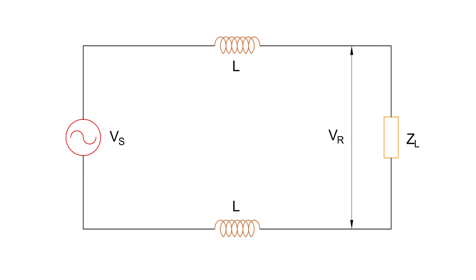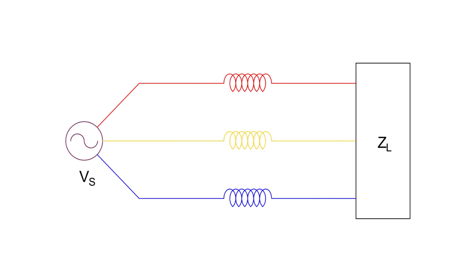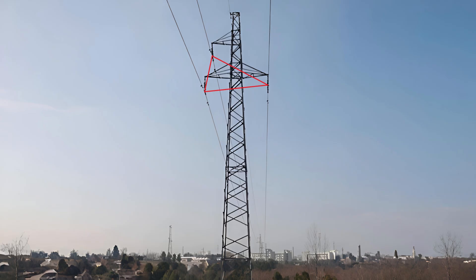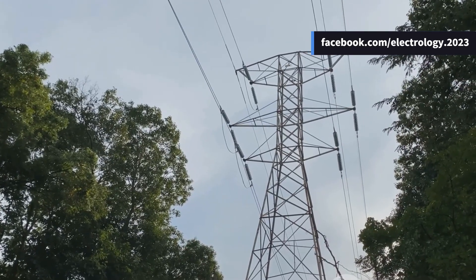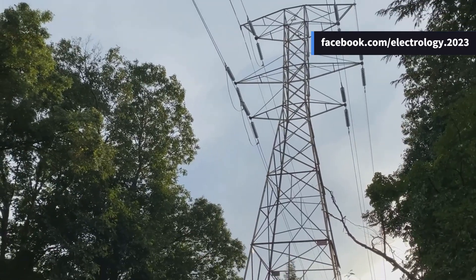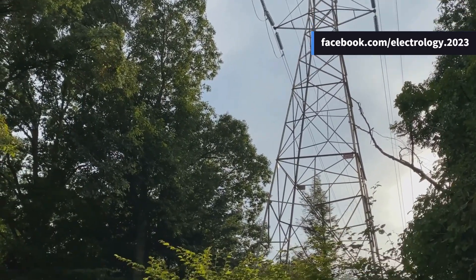In a three-phase system, the situation gets more interesting. Each conductor not only links its own flux — giving self-inductance — but also links the flux produced by currents in the other two conductors, leading to mutual inductance. If the conductors are placed symmetrically, say at the corners of an equilateral triangle, the inductance per phase is equal. But if the spacing is unsymmetrical, each phase develops a different inductance, meaning unequal voltage drops even if currents are balanced.